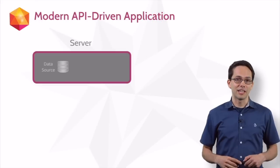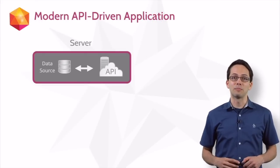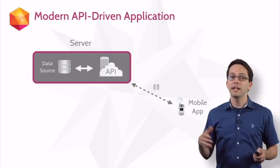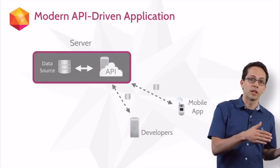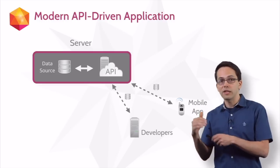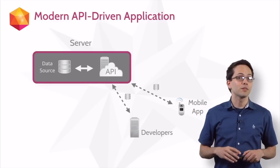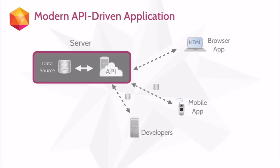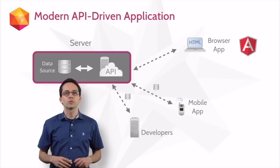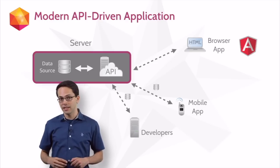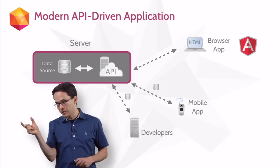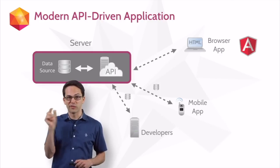An increasing number of applications these days are building their own APIs. They might do this to interface with a mobile application, say on iOS. They might also build an API so that other developers can build applications that communicate with their application. They might also build APIs to communicate with front-end applications, like the application we're building in this course using Angular. So in this course, we'll be building a front-end application using Angular, which will communicate with a back-end application — but we're not going to be building that back-end. We're just going to focus on the front-end.